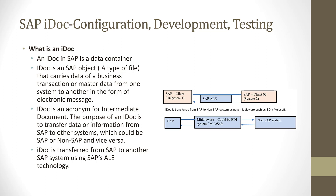Consider SAP system one as home address one, and consider the IDOC as a letter or an item which you want to send through a courier. Consider your middleware or PI system as a courier or postman service, which will collect the box from you — house one — and take it to house two, which is SAP system two.